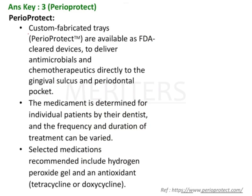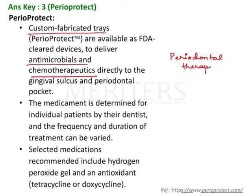So let's see what Perioprotect is. These are custom fabricated trays available as FDA approved to deliver antimicrobials and chemotherapeutics directly into the gingival sulcus. Following periodontal therapy, you can also install a periodontal chip, or you can give a Perioprotect tray to the patient to wear.